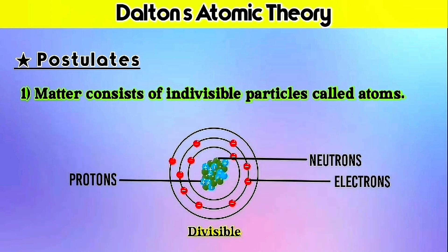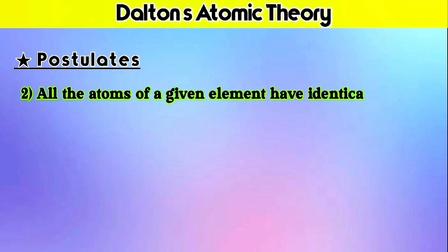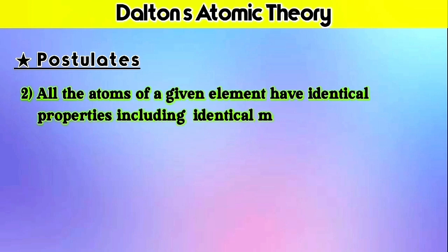Although we will talk about its drawbacks after completing all the postulates. So now let's talk about the second postulate of this theory. The second postulate is: all the atoms of a given element have identical properties, including identical mass.